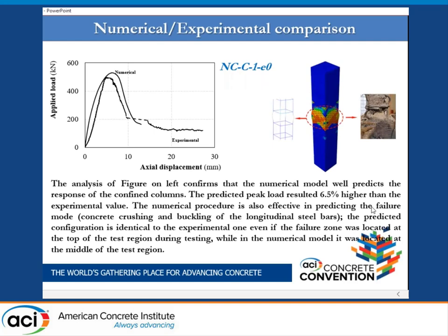In this slide, we report the comparison in terms of axial load versus axial displacement of the experimental and numerical curves, and on the right in terms of failure pattern. The analysis of the figure on the left confirms that the numerical model well predicts the response of the confined columns. The predicted peak load result is 6.5% higher than the experimental value. The numerical procedure is also effective in predicting the failure mode — concrete crushing and buckling of the longitudinal steel bars. The predicted configuration is identical to the experimental one, though the failure zone was located at the top of the test region experimentally, while the numerical model locates it at the middle.